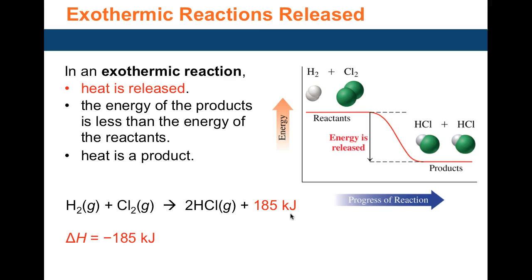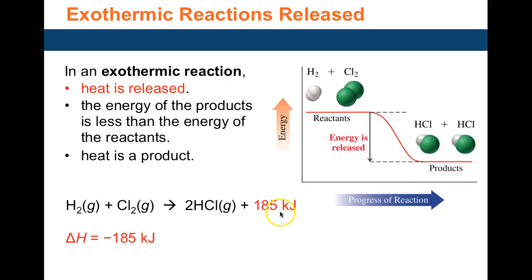When plotted graphically — energy versus reaction progress — you see the reactants are higher in energy and the products are lower. That energy difference of 185 kilojoules is released when hydrogen and chlorine form hydrogen chloride gas, indicating an exothermic reaction.